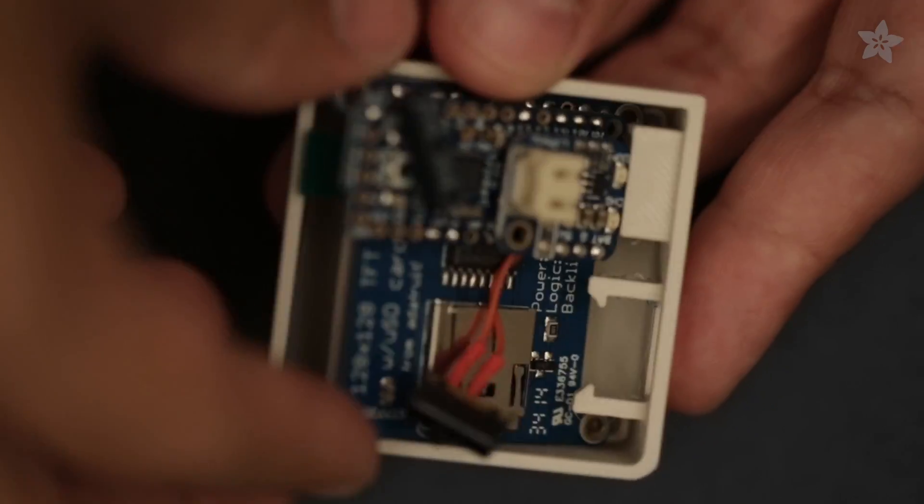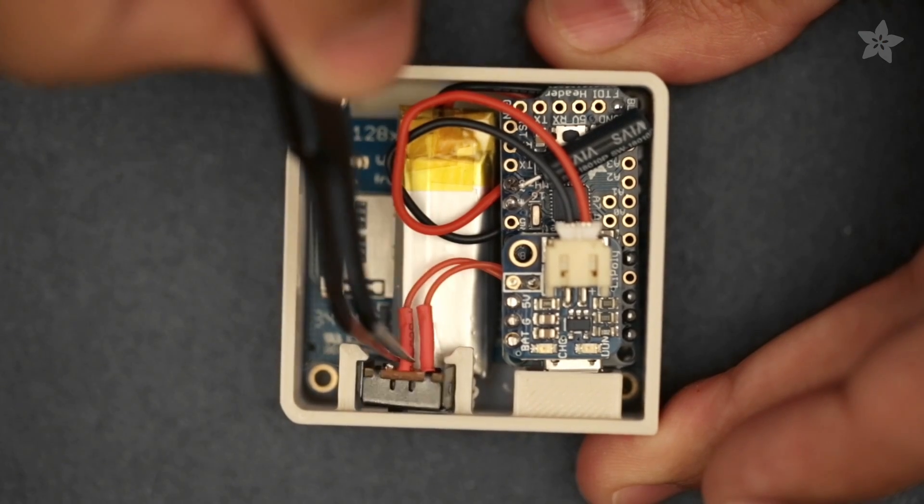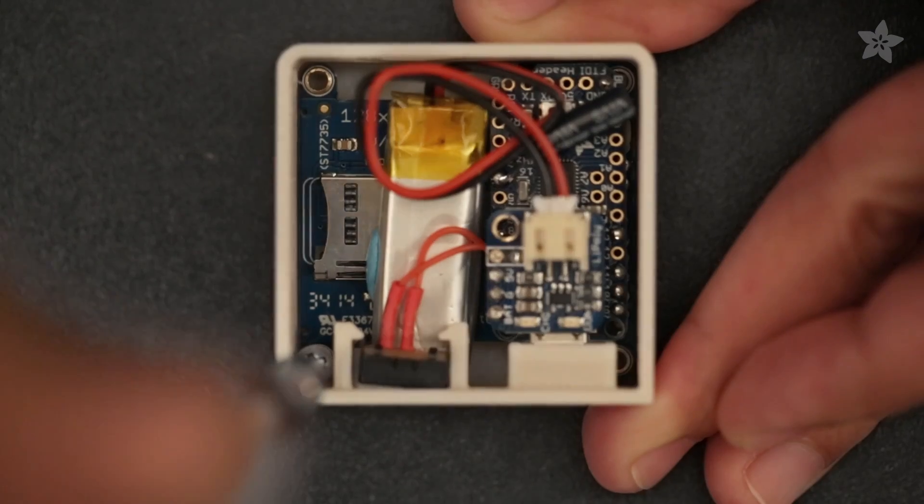Fit the assembled circuit inside the printed enclosure and secure with a single mounting screw. A slide switch is held in place with built-in fittings and lets you easily power the circuit on and off.